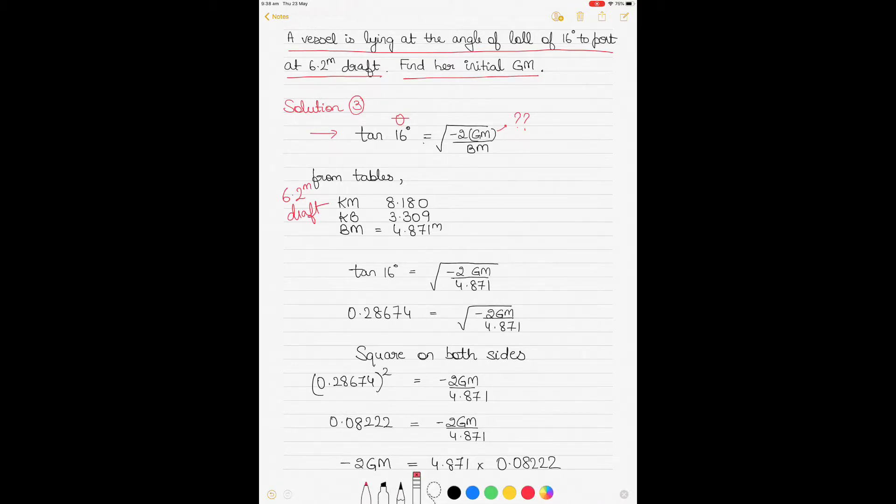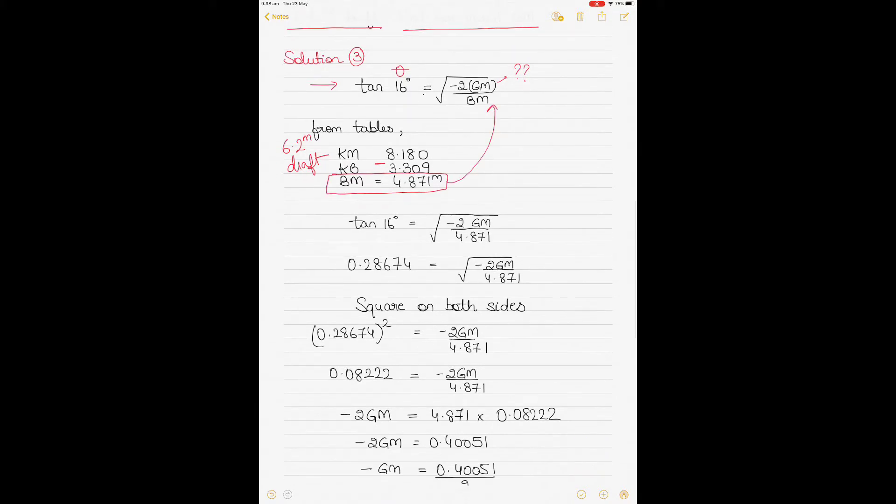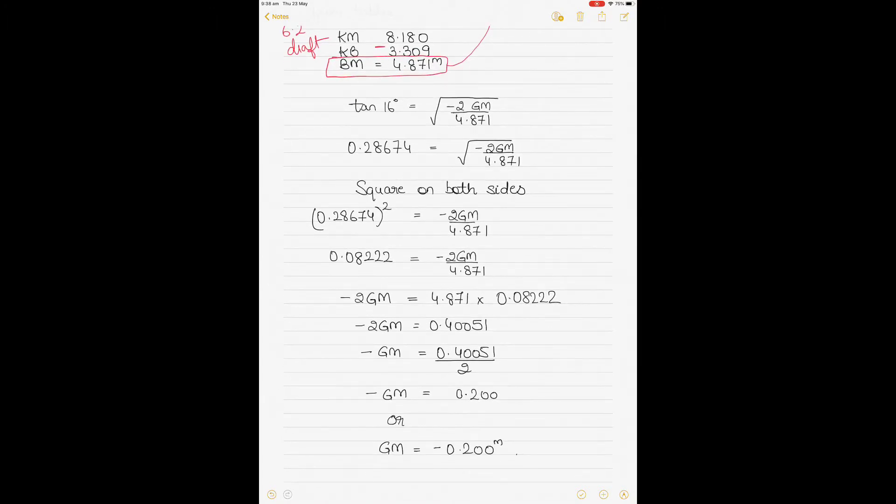And you can see that those are the values I've used. So KM and KB values are given to me, and all I have to do is just subtract one from the other to get the value of BM. So once I subtract KM minus KB, I get BM. I'll put this BM into the formula here, which will result in tan 16 degrees equals under root of minus 2 GM by 4.871. So what you should be doing is find out tan 16 first. So tan 16 equals 0.28674. Leave the right-hand side of the equation the way it is.